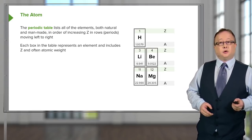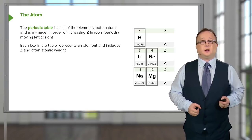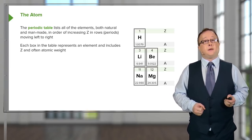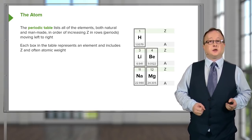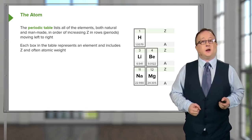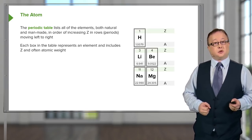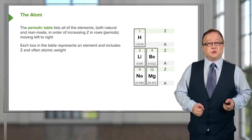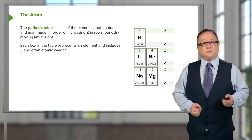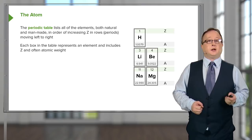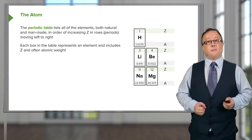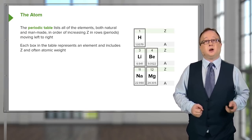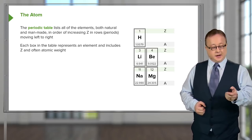I've introduced another letter — A — which correlates to the atomic mass. Notice the atomic mass is larger than the atomic number, and it correlates to the number of protons and the number of neutrons. Also take note of the fact that the numbers are not whole. This is because in the periodic table you have to take into consideration the different types of isotopes, which have different masses overall, when calculating the relative atomic mass.